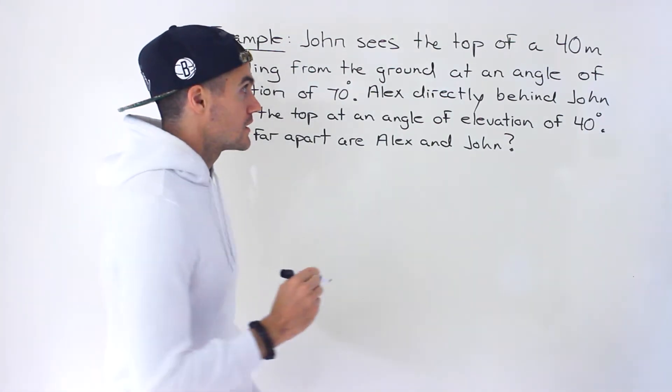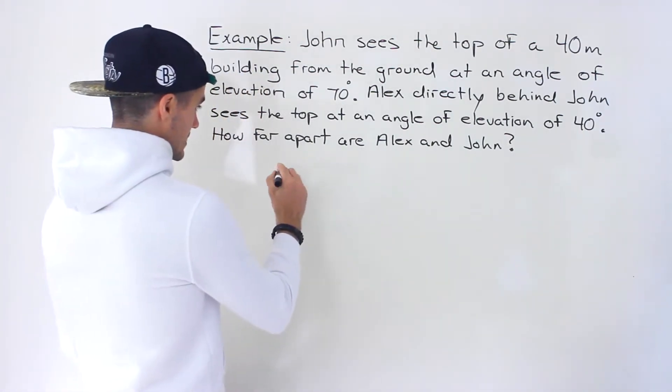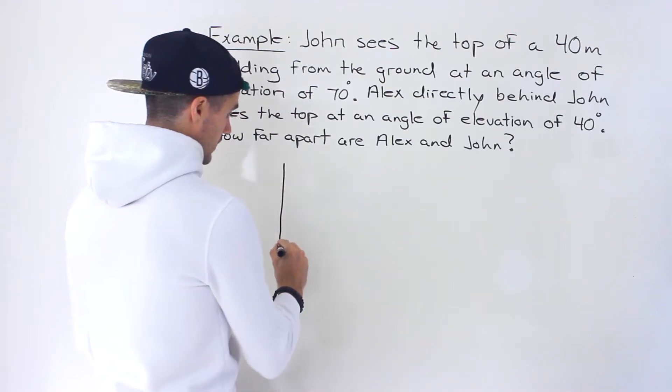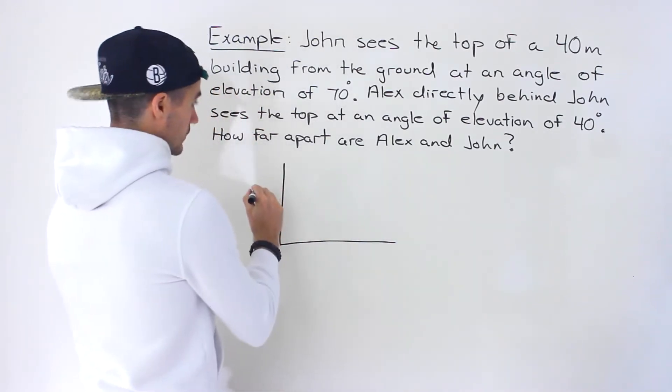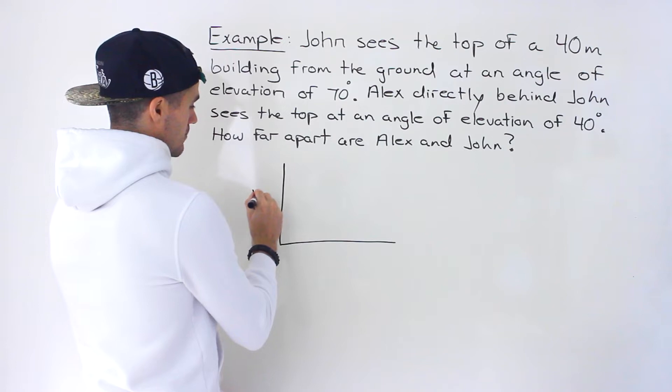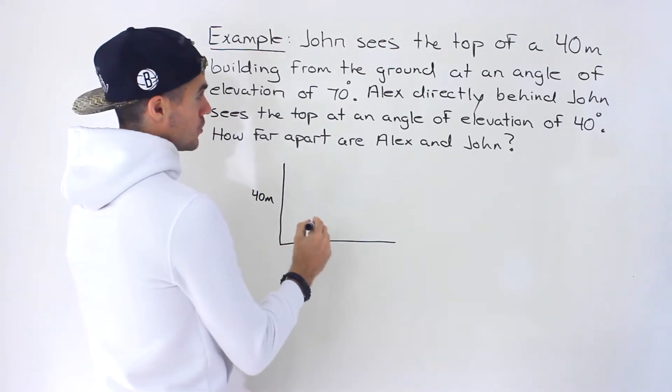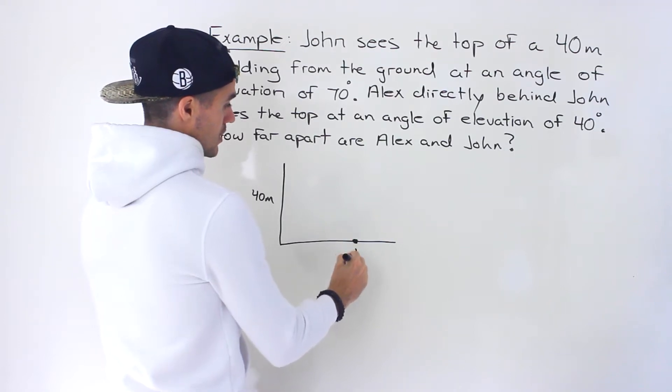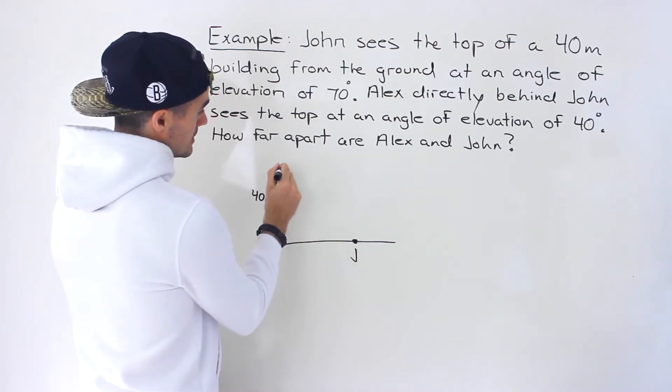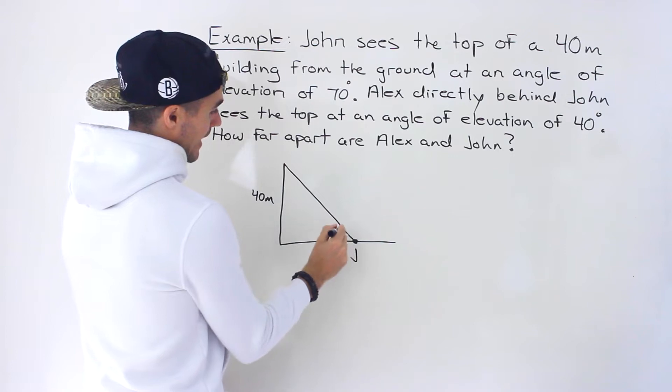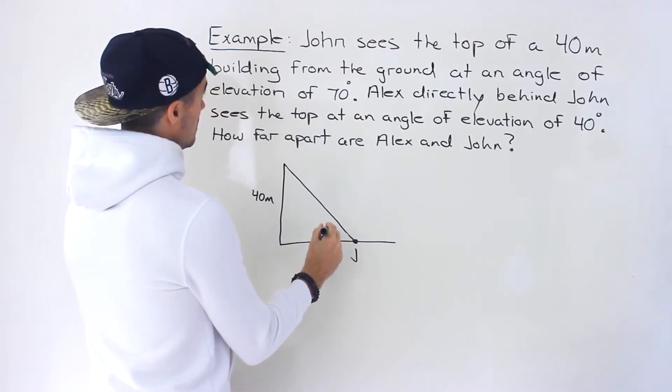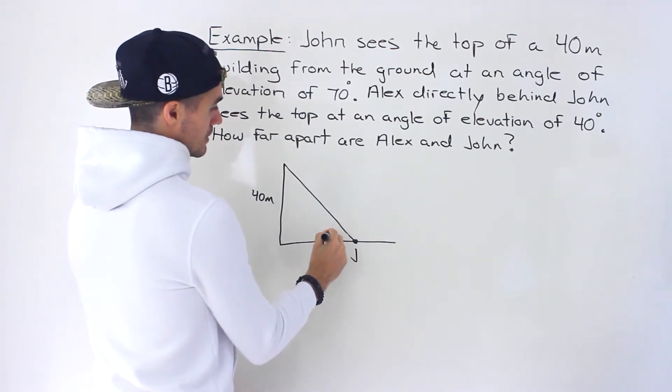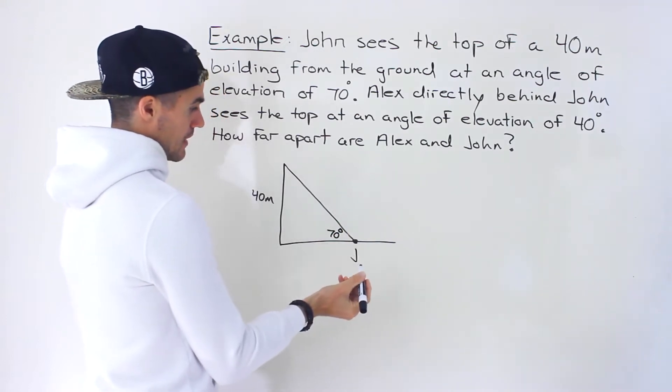So let's draw a diagram here. Let's say that this here is the building. This is the ground. So this building we're told is 40 meters and then we're told that John sees this building. So let's say John is right there. He sees this building at an angle of elevation of 70 degrees like that.